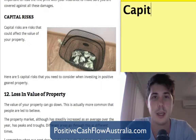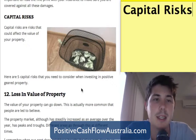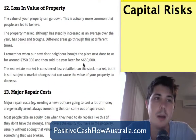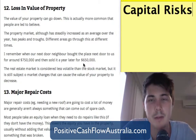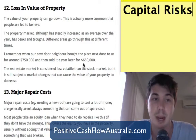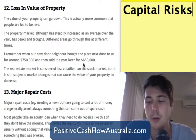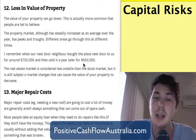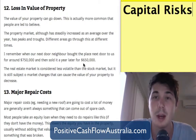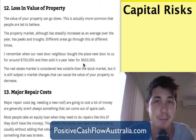Next I want to look at capital risks — risks that could affect the value of your property. There are five capital risks to consider when investing in positively geared property. Number twelve is loss of value of the property, just market fluctuations. Even though people say property tends to double every seven to ten years, it doesn't happen consistently — we have big peaks and booms, then times where property prices go backwards. My neighbours bought a property for $750,000 during the boom, and a year later sold it for $650,000 — down $100,000 in one year.